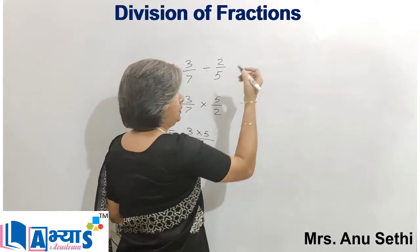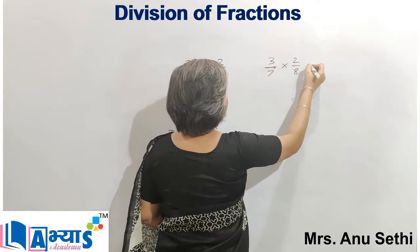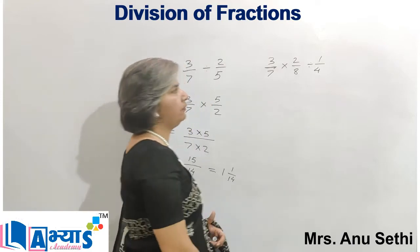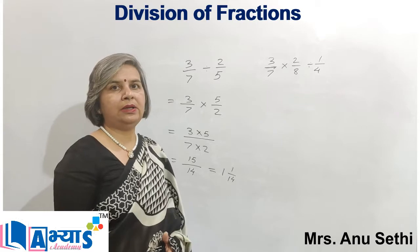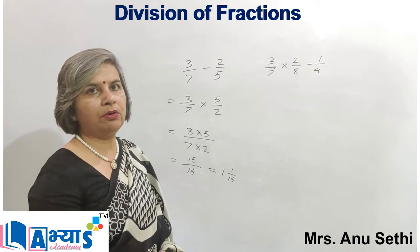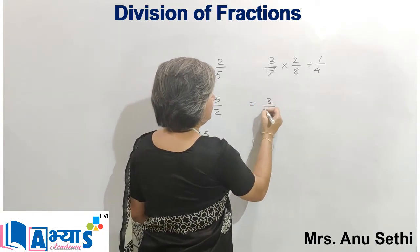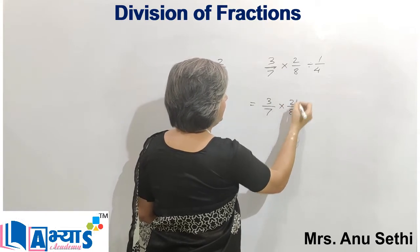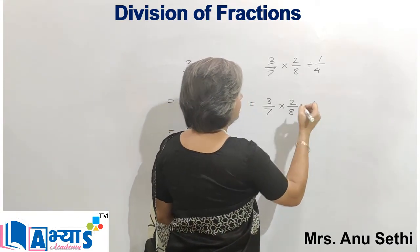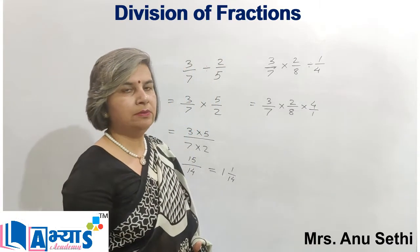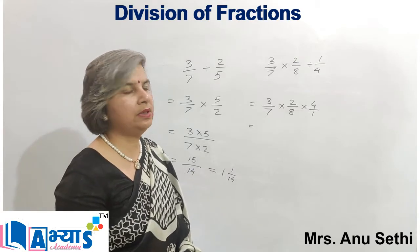Now let us take another example. Suppose I have to perform the operation 3 by 7 into 2 by 8 divided by 1 by 4. If I have to perform this type of calculation, we follow the concept of BODMAS, and in BODMAS, first is bracket, then of, then division. So we perform the division first. We will convert: we will have 3 by 7 into 2 by 8, and we will take the reciprocal of 1 by 4, which comes out to be 4 upon 1, and the division sign will be changed to multiplication. Now we will see if there are any common factors in the numerator and the denominator, and we will cancel them out.